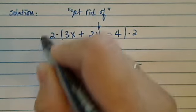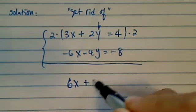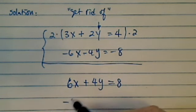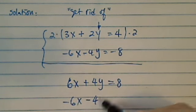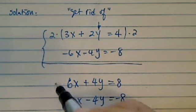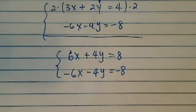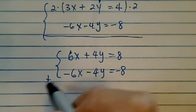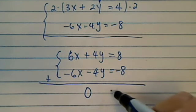So in this case I have 6x + 4y = 8. The next equation I have -6x - 4y = -8. Now ordinarily we don't have the two numbers exactly the same - this is actually a special case. So when you add the two, you end up with 0 = 0.